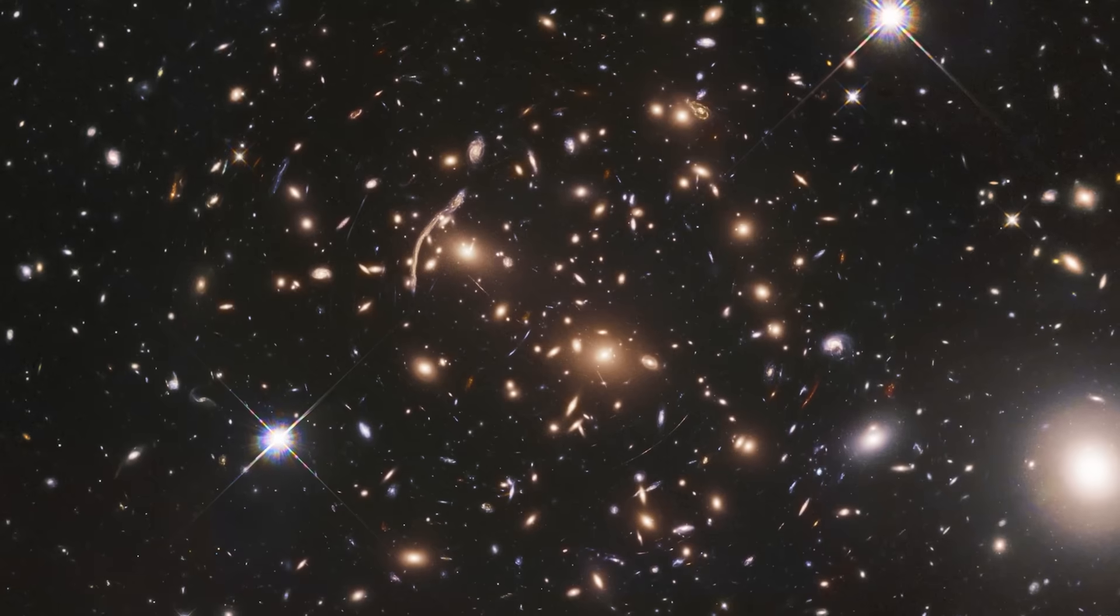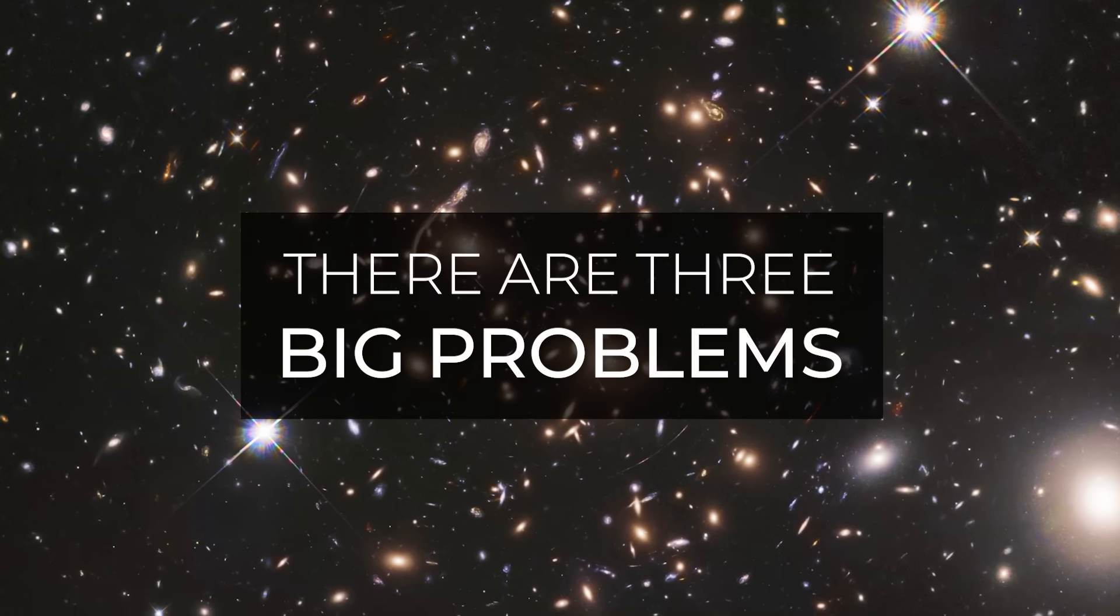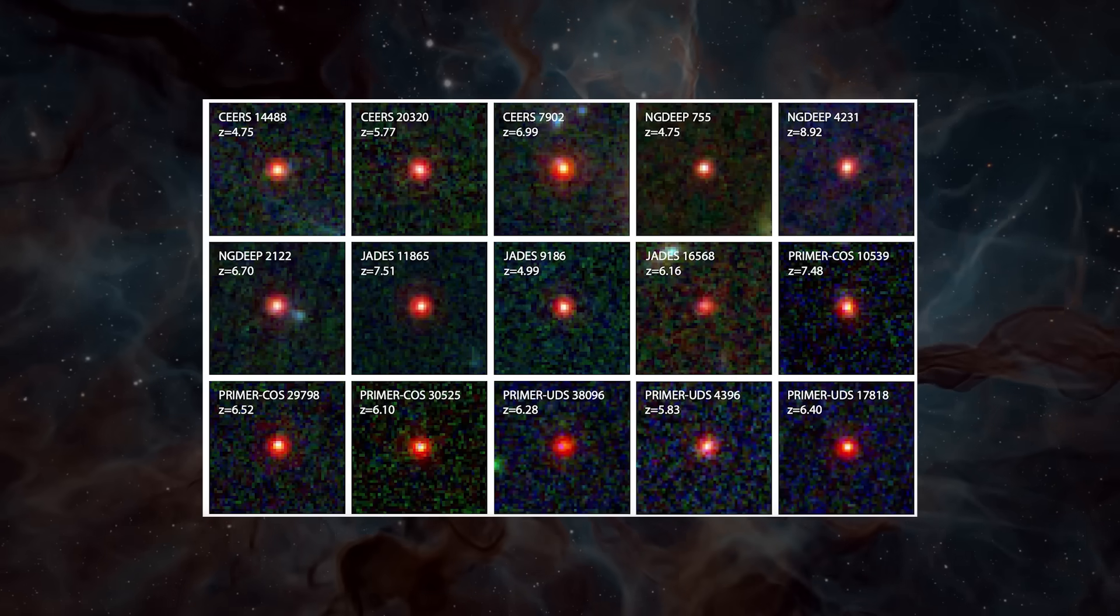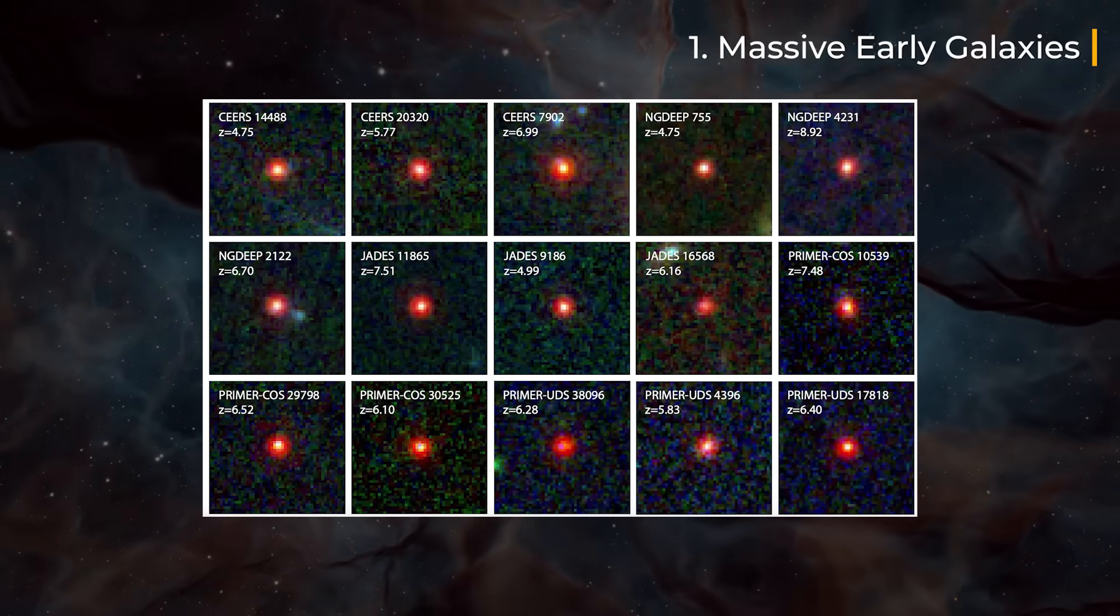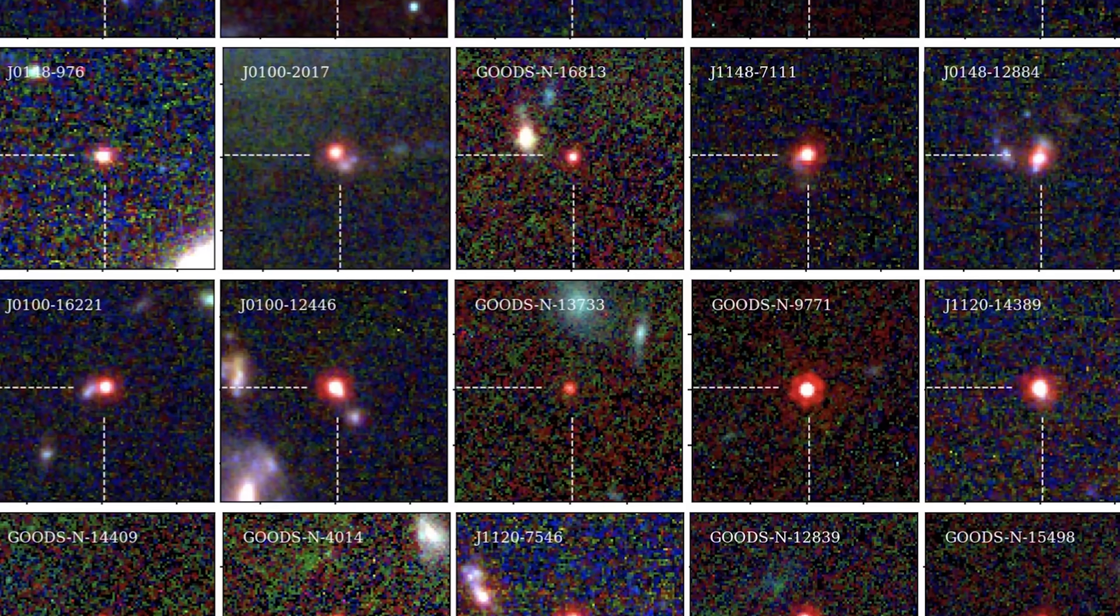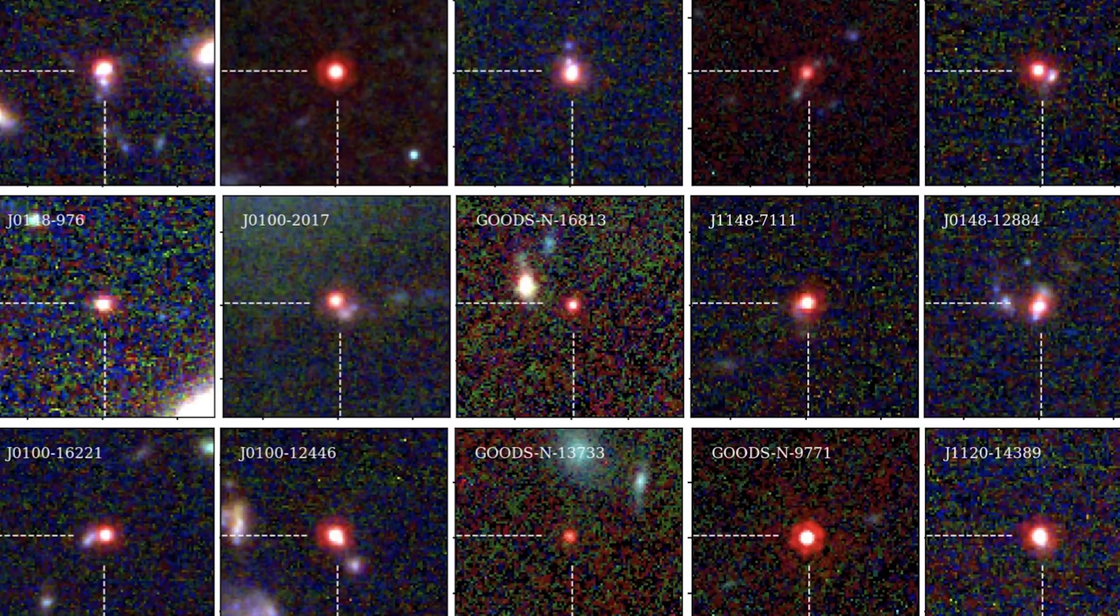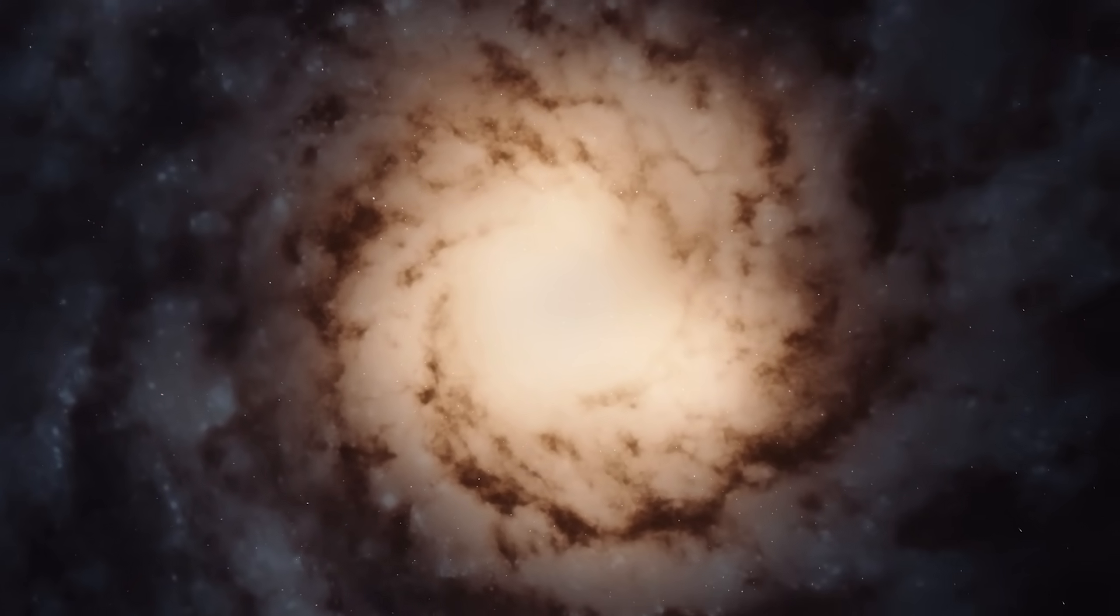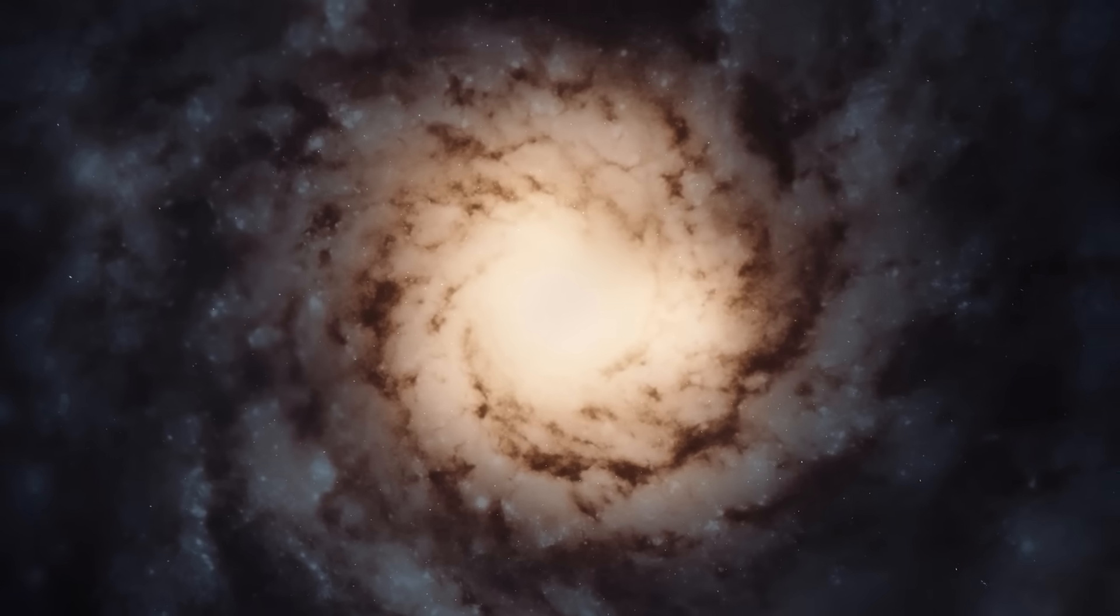Webb's deep observations of Abell S1063 and other regions of the early universe have discovered something truly unexpected: a population of galaxies that formed far earlier and grew much faster than current theories predict. Some of these galaxies, seen less than a billion years after the Big Bang, are already nearly as massive as the Milky Way. This has come as a surprise to scientists and is now seen as a serious challenge to our current understanding of how galaxies form and evolve.